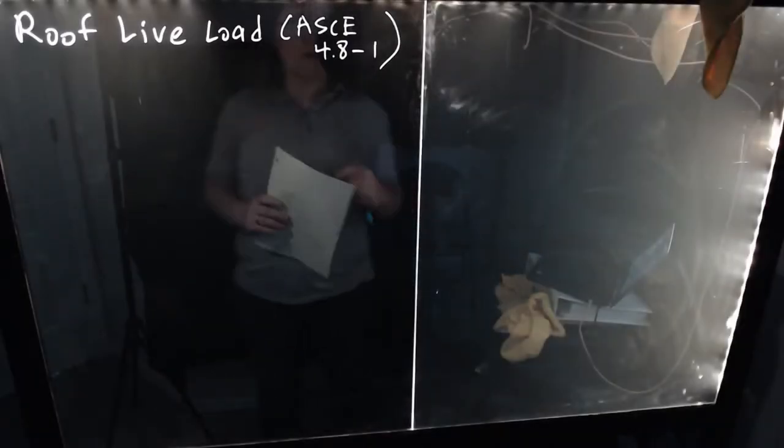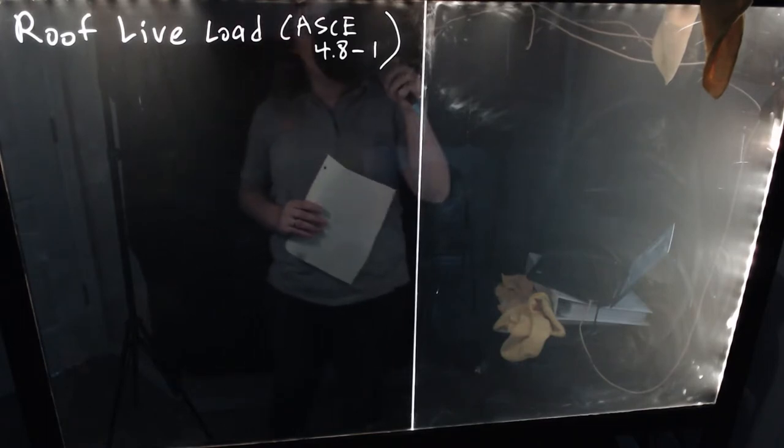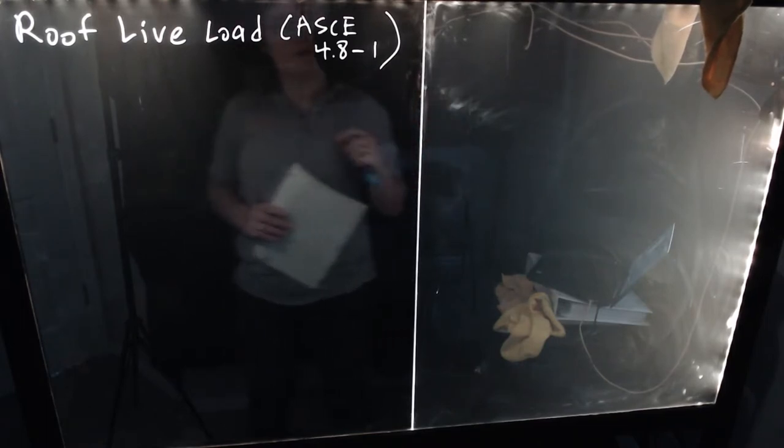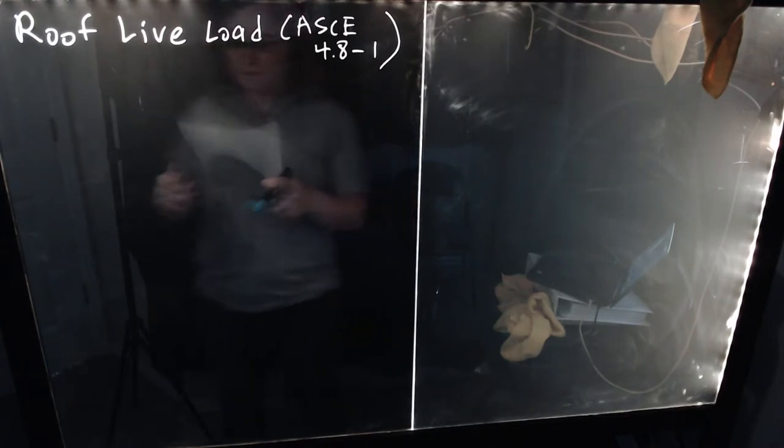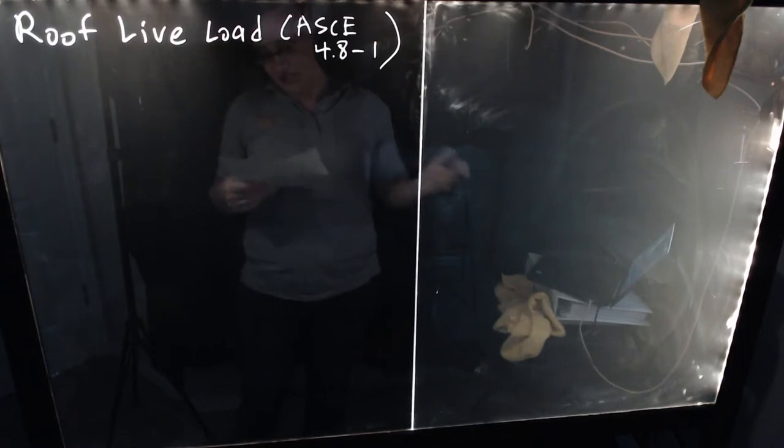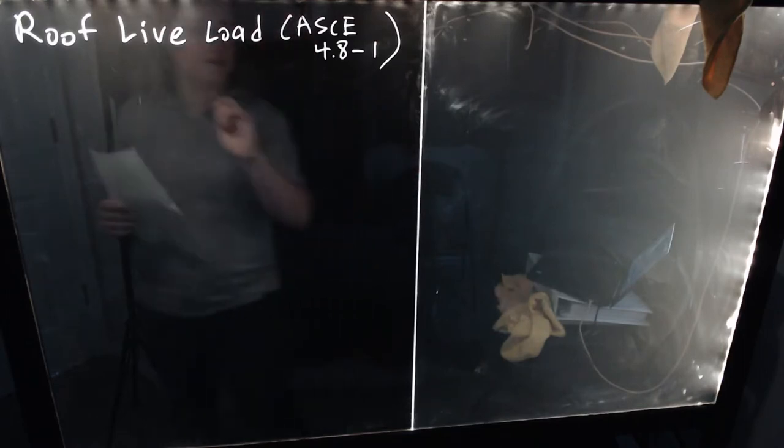Alright, next let's consider a special case of live load reduction, and that is the provisions for roof live load found in ASCE 4.8-1, or really just ASCE section 4.8. The equation is 4.8-1, but that's in the beginning of the section.